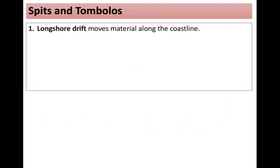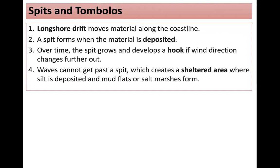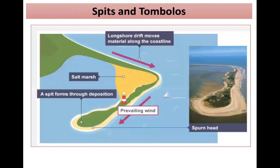Spits and tombolos are examples of depositional landforms. Longshore drift moves material along the coast, and a spit forms when that material is deposited. Over time the spit grows and develops a hook if wind direction changes. Waves cannot get past the spit, creating a sheltered area behind it where silt is deposited and mudflats or salt marshes form. An example of this is Spurn Head.